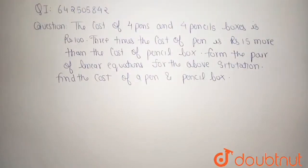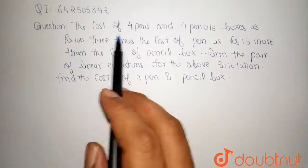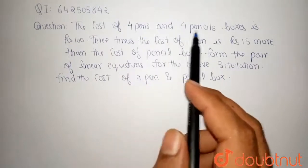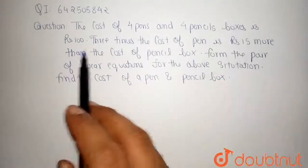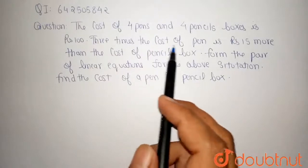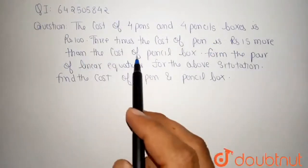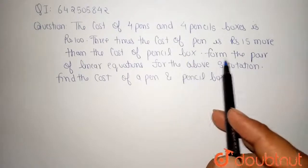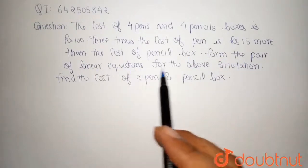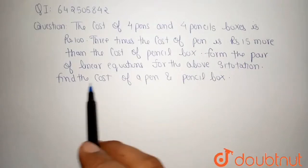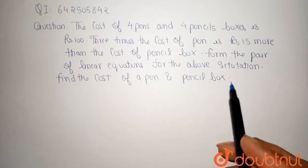Hello friends, welcome to Doubtnut. Our question is the cost of 4 pens and 4 pencil boxes is rupees 100. 3 times the cost of pen is rupees 15 more than the cost of pencil boxes. Form the pair of linear equations from the above situation and find the cost of pen and pencil boxes.